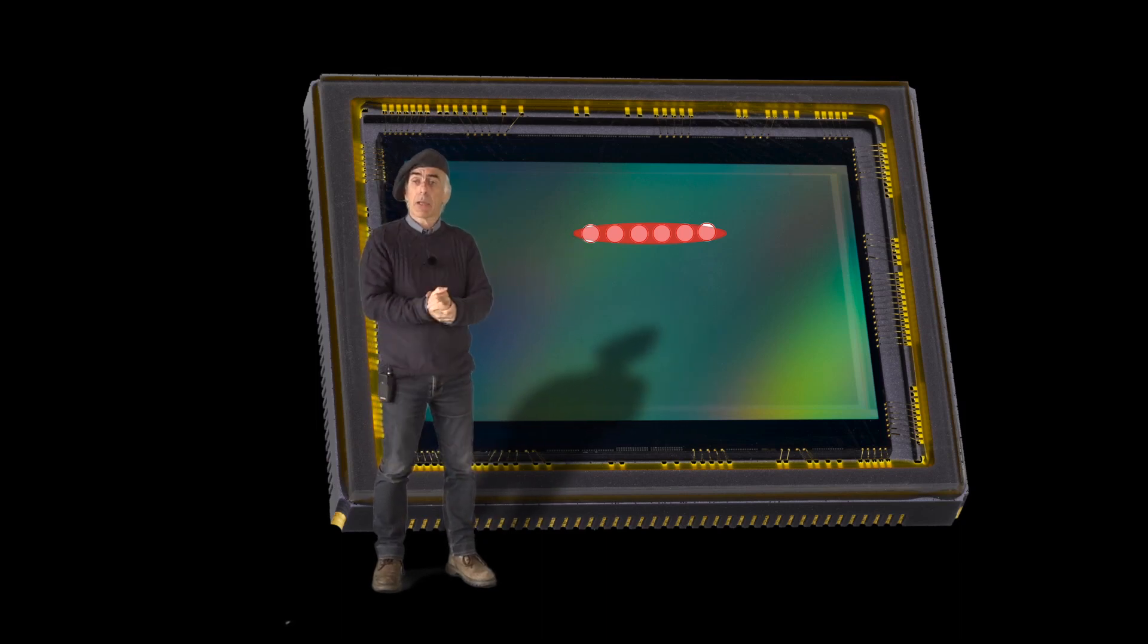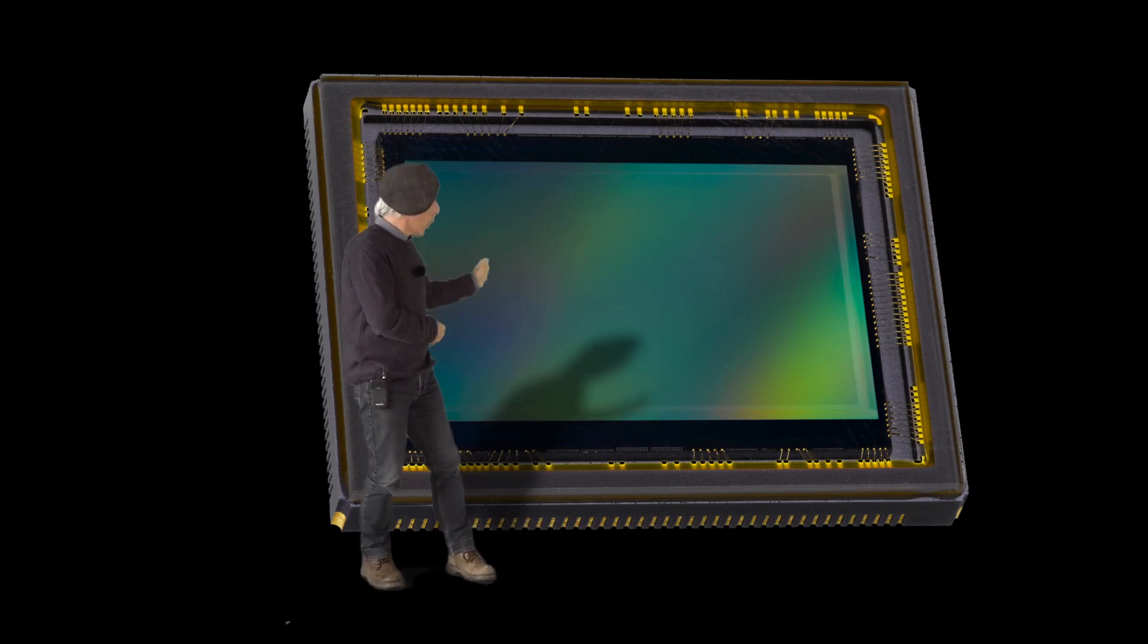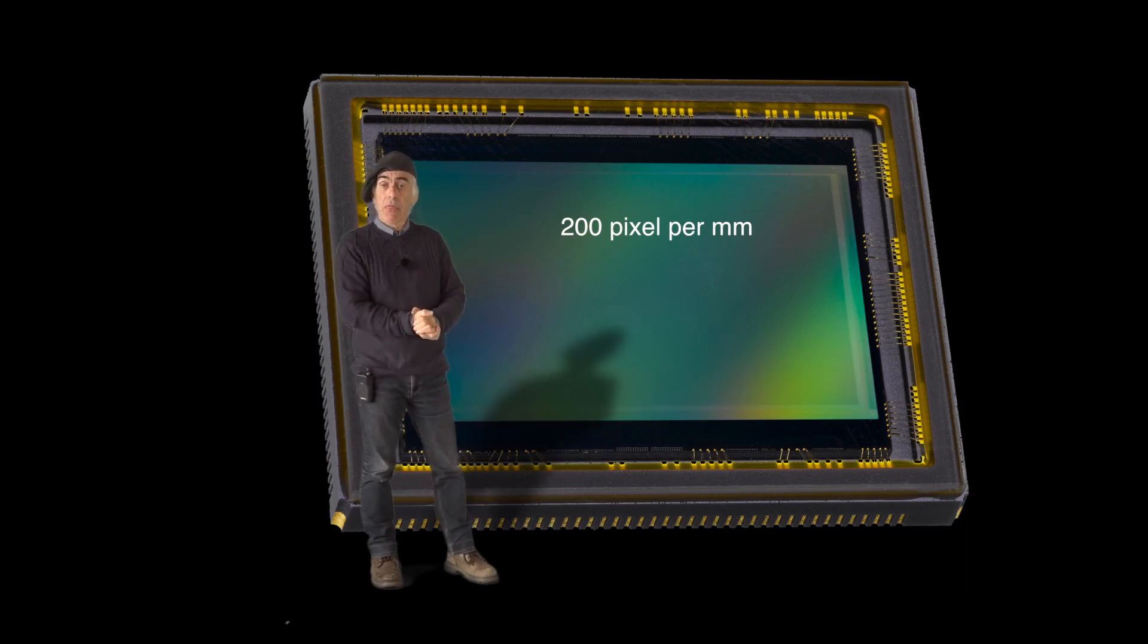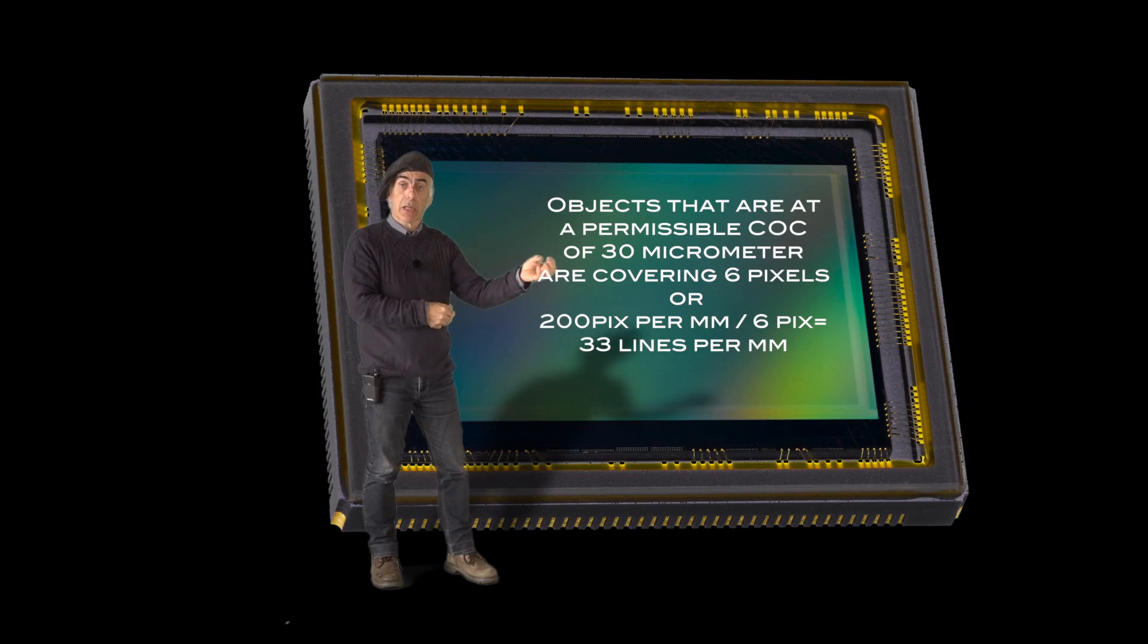Why? Because 30 micrometer divided by 5 micrometer per pixel gives you basically 6 pixels. Now initially we know that the sensor has 200 pixels per millimeter, but now because of that circle of confusion for those objects that we did not focus on, we now only have 33 lines per millimeter for those objects.